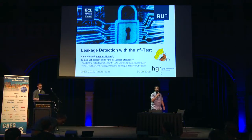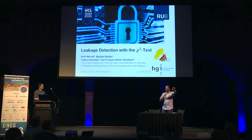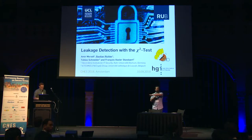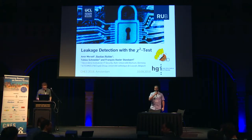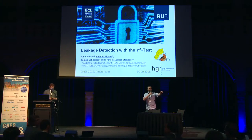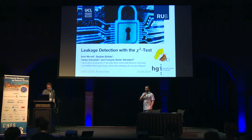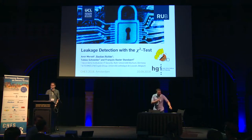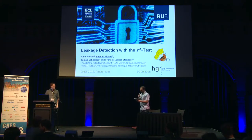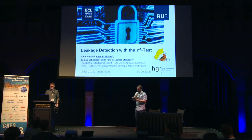Before the next presentation, I'll continue to ask anyone standing to find a seat. There are chairs up front and on the edge of this row, so you don't have to interrupt anyone. For the second presentation, we'll have leakage detection with C-squared tests, by Amir Murady, Bastian Richter, Tobias Schneider, and Francis Xavier-Standard, presented here by Bastian.